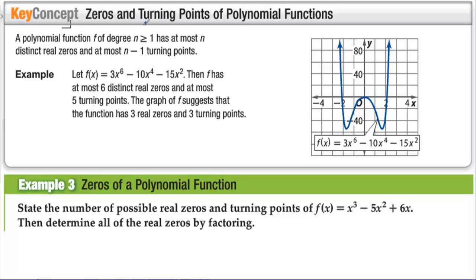Zeros and turning points of polynomial functions: a polynomial function f of degree n ≥ 1 has at most n distinct real zeros and at most n − 1 turning points. For a degree-6 polynomial, there's a possibility of 6 zeros and 5 turning points. This specific graph has 3 distinct zeros and 3 turning points — fewer than the maximum possible.